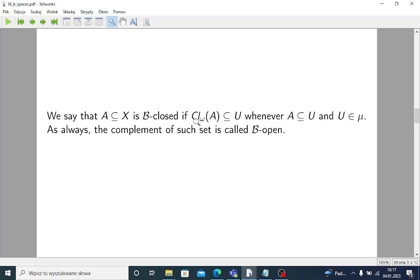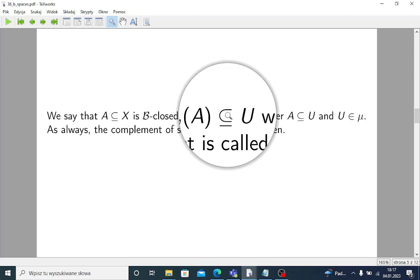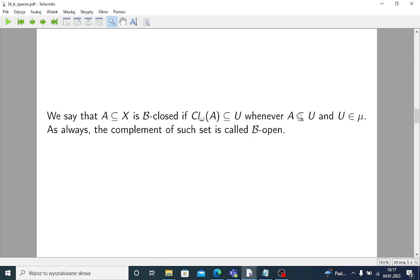so with respect to this weak structure, the intersection of all those sets which are closed in the sense of this weak structure and A is contained in them - so, the omega closure of A is contained in U for any U that is open in the sense of generalized topology μ and A is contained in this U.